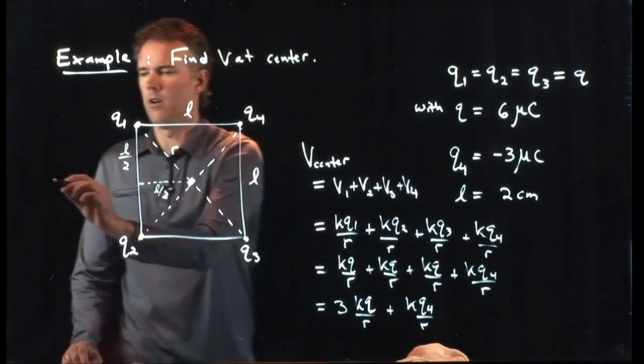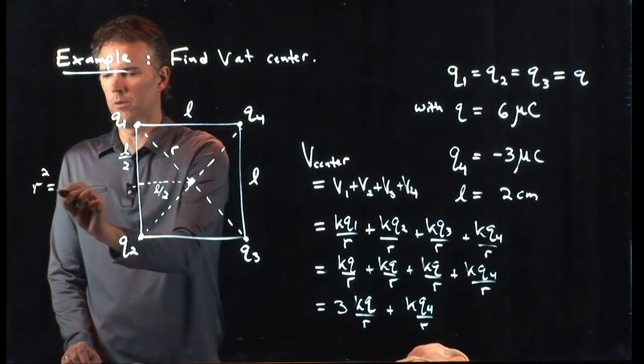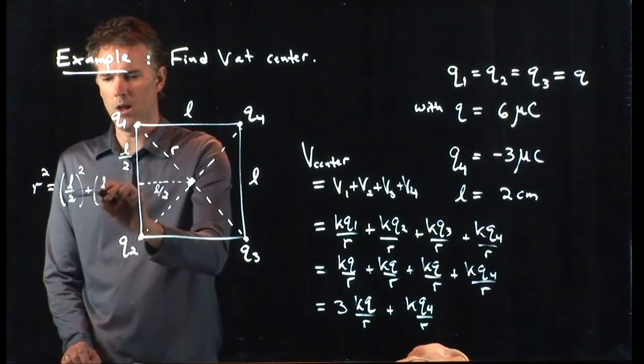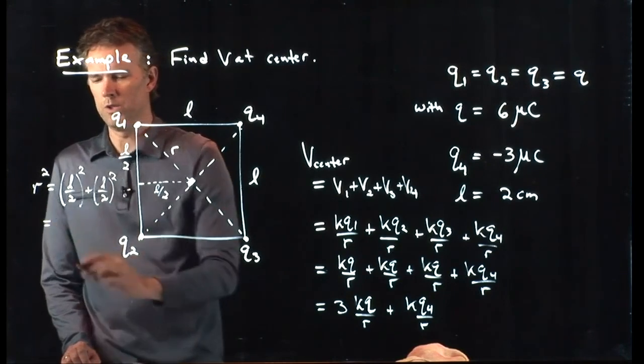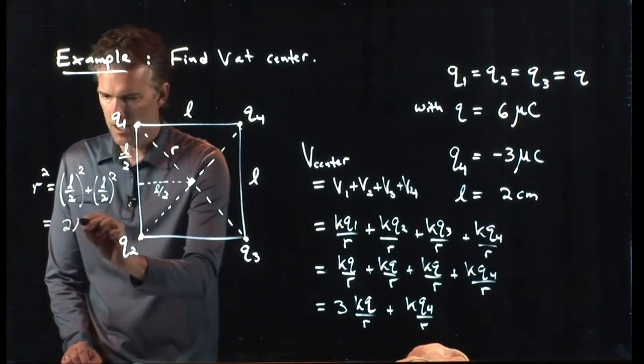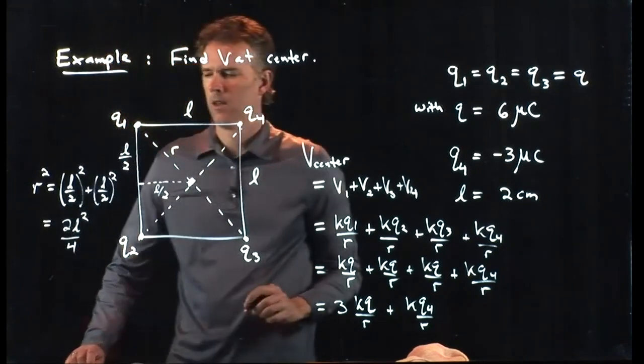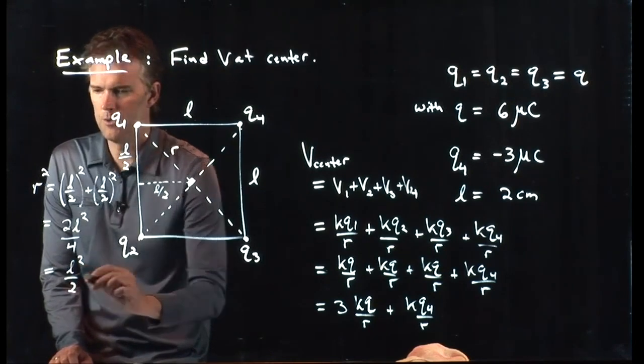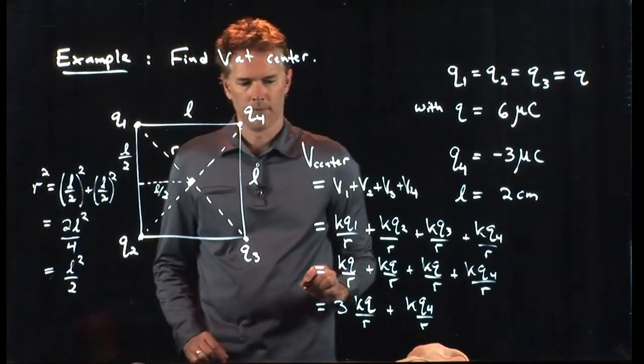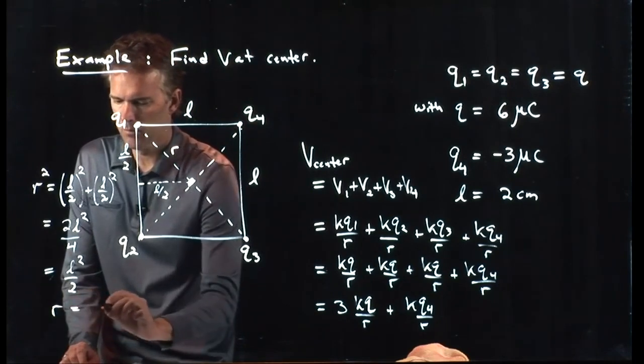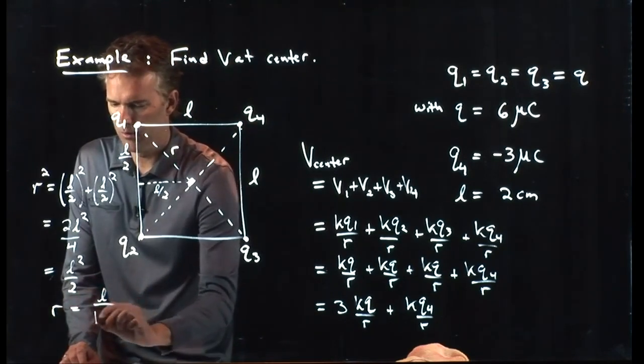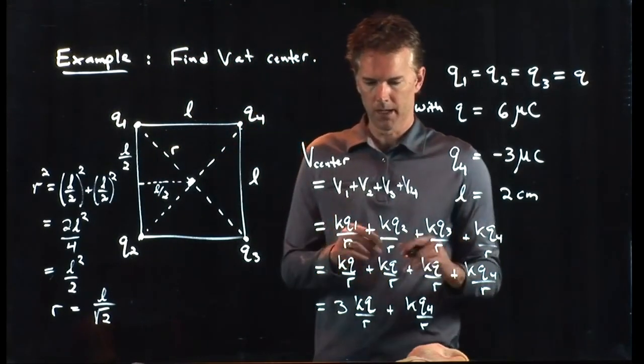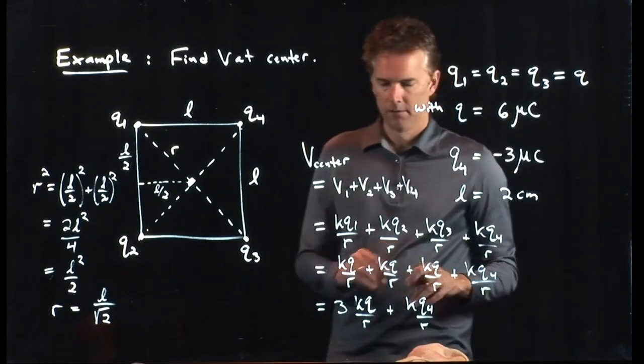So we have R squared equals L over 2 squared plus L over 2 squared, which is 2L squared over 4, which is L squared over 2. So R in fact just becomes L over root 2. Now we have all those numbers and we can plug it in here and try it out.